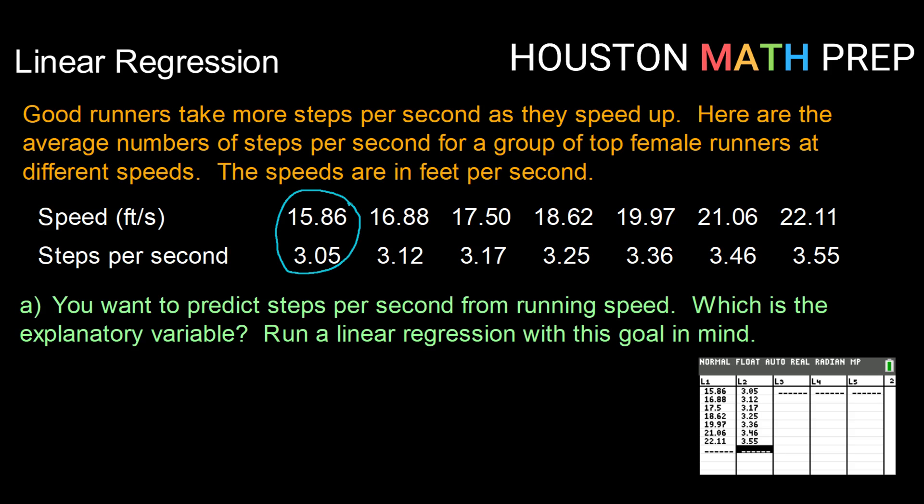So let's say that you want to predict steps per second from running speed, which is the explanatory variable, and then run a linear regression with this goal in mind. Remember that the explanatory variable is going to be the variable that you use to predict your secondary variable. So if we want to predict steps per second using running speed, then that means our explanatory variable is going to be our running speed. So that means we're going to treat running speed as x and steps per second as y.